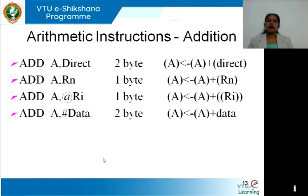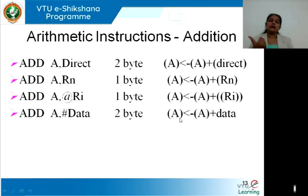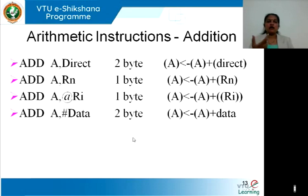The next is ADD A, #data — immediate addressing — where an 8-bit immediate value is directly provided. For example, if you know a constant like 10 needs to be added repeatedly, you write it as #10. The contents of the accumulator are added with the immediate data and the result is stored back in the accumulator — a 2-byte instruction. So ADD supports all addressing modes: direct, register, register-indirect, and immediate.